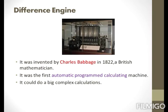Difference Engine. Charles Babbage invented a machine called the Difference Engine in the year 1822 to prepare mathematical tables in the 19th century. The Difference Engine was the first automatic programmed calculating machine and it could do big complex calculations.